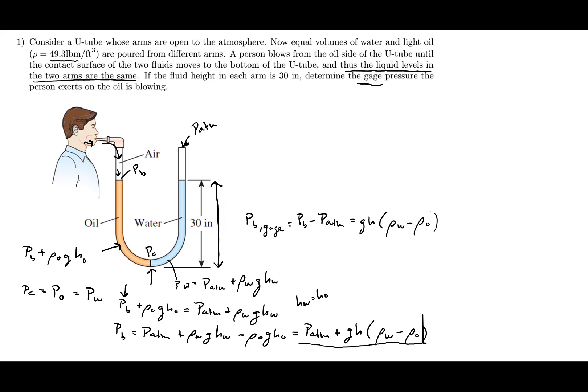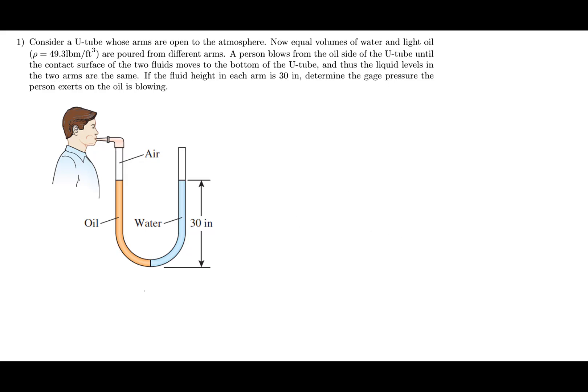I'll also solve it a second way — the way I actually prefer. I'm going to erase this and use my preferred manometer approach: start where the pressure is known. We know atmospheric pressure at the open end, so I'll label points and solve for pressures step by step — starting at the known pressure, solving for P1 (the contact pressure, PC), and then solving for PB.